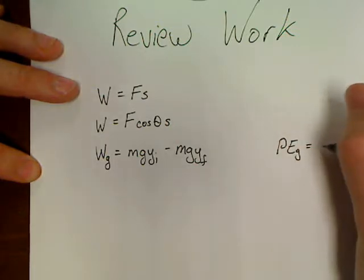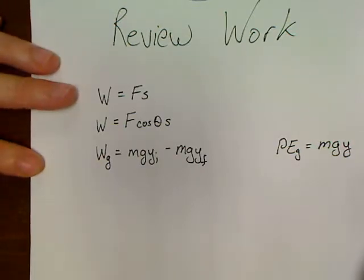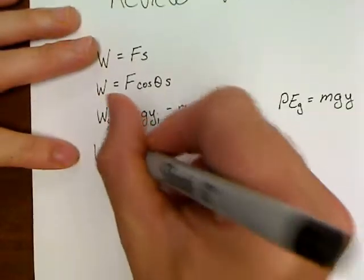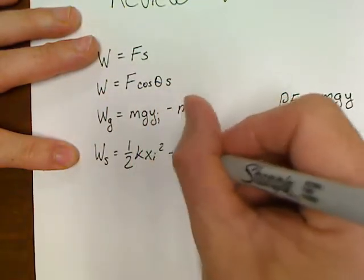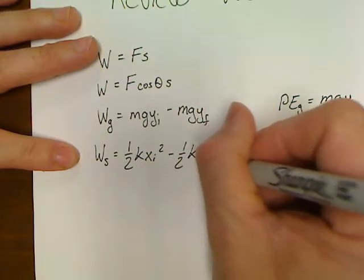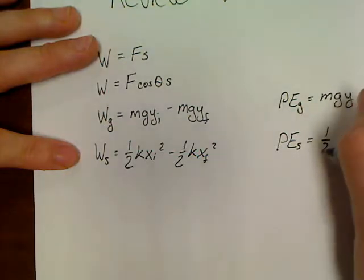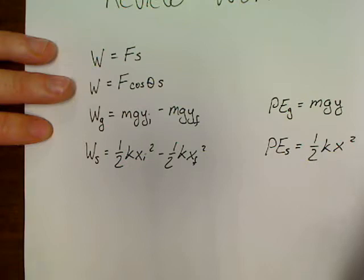Potential energy due to gravity is nothing but mgy in the first place. And then we can also do work done by spring, which is one half k·x_i squared minus one half k·x_f squared. Potential energy for a spring is given by the equation one half k·x squared, so all that kind of ties together.